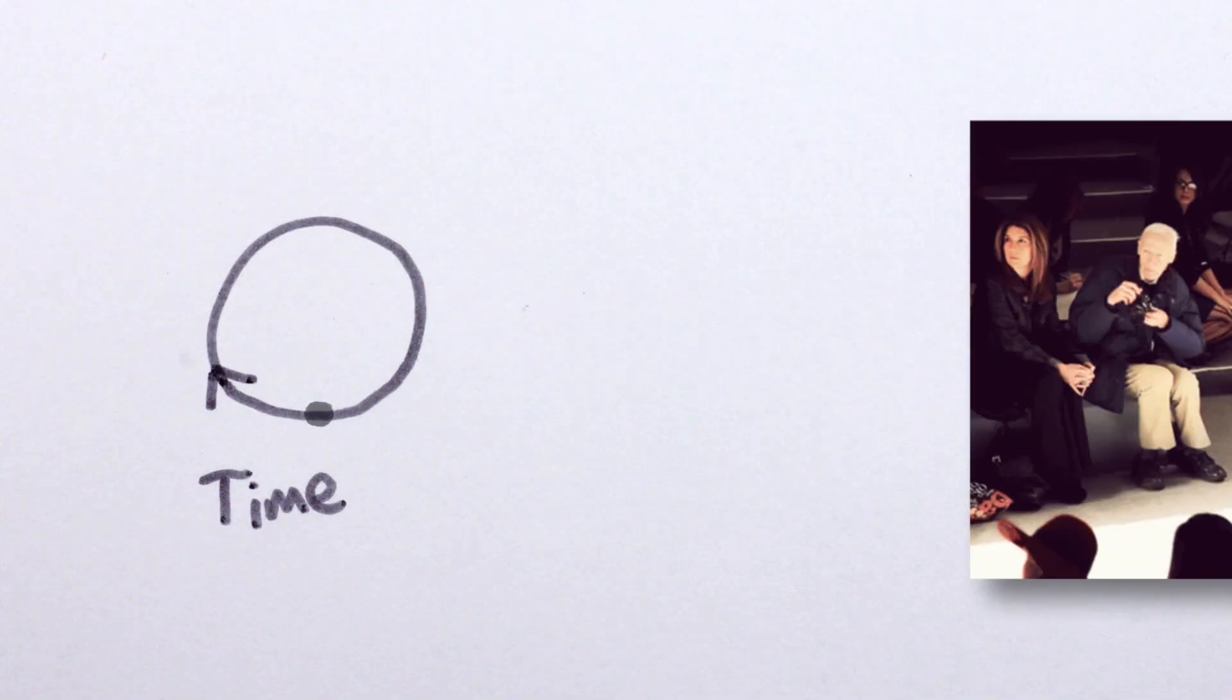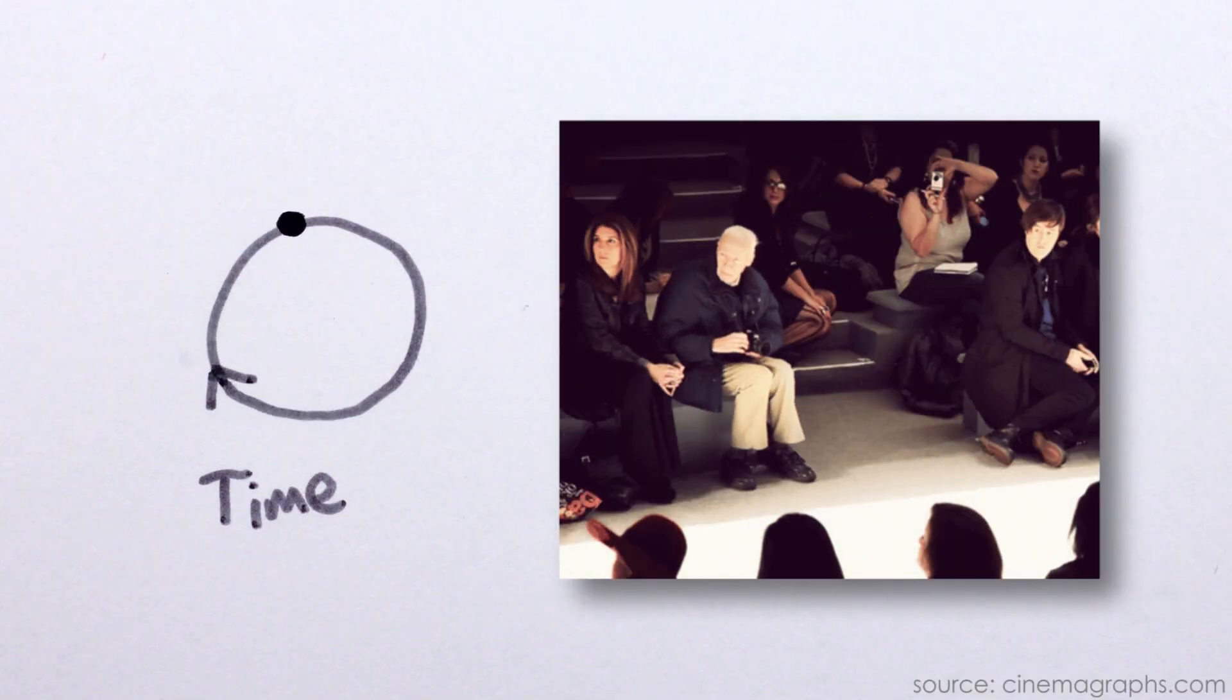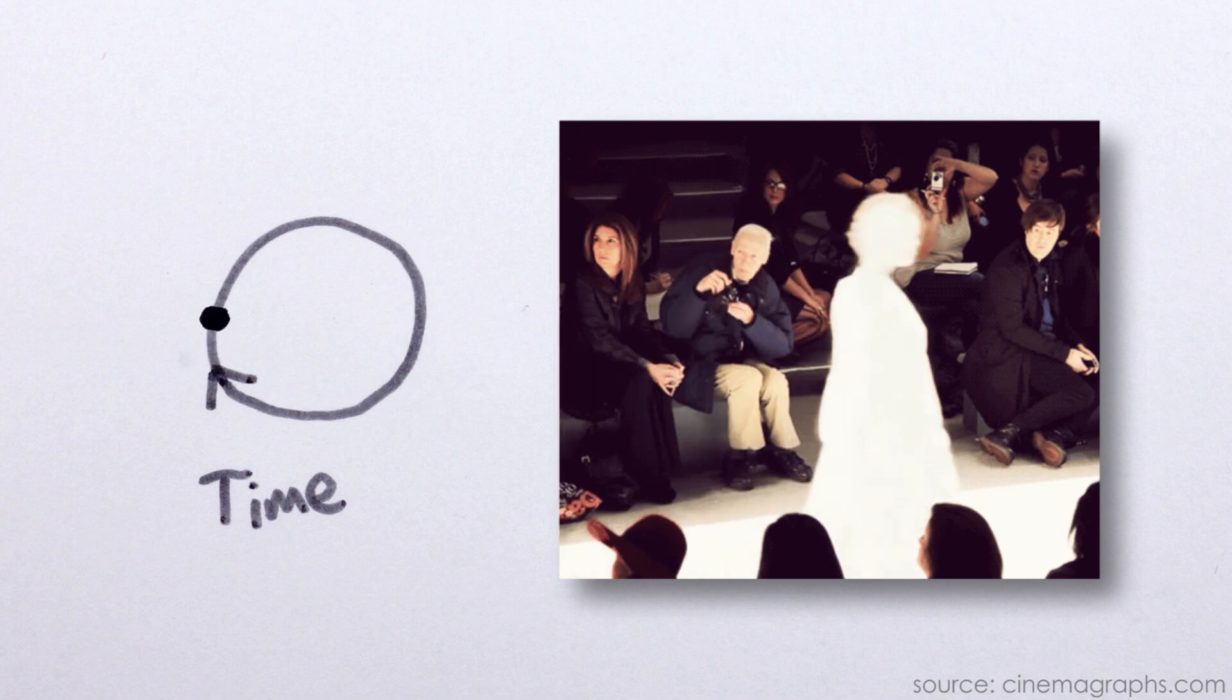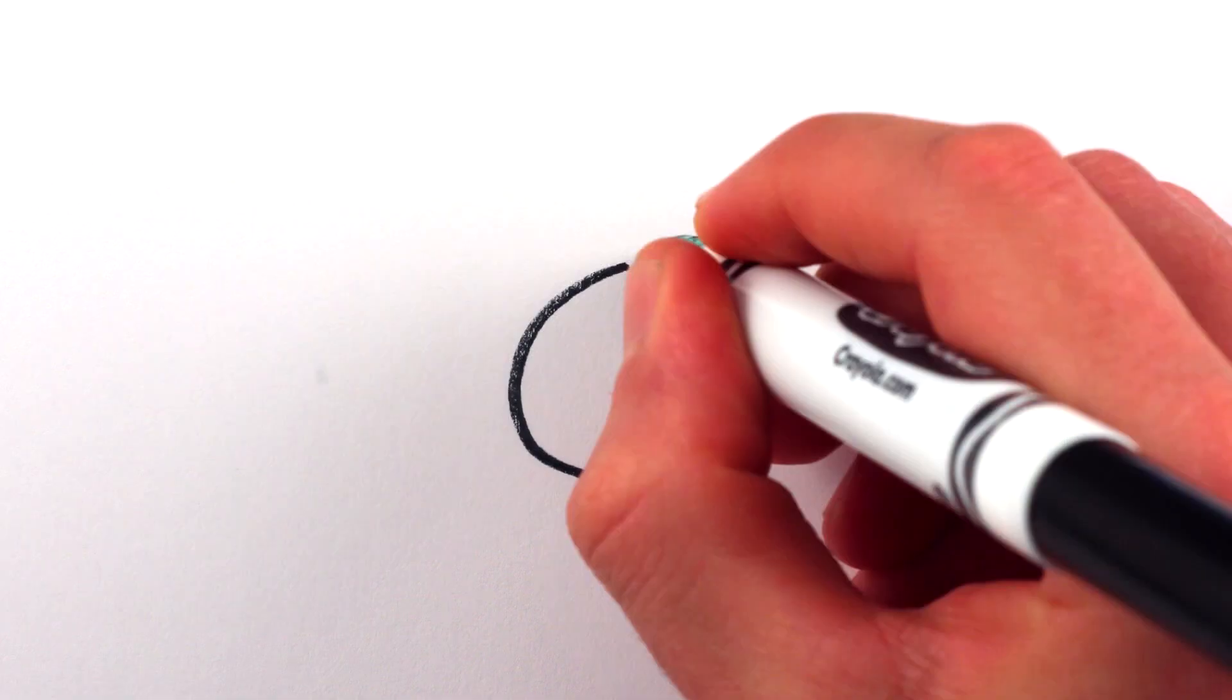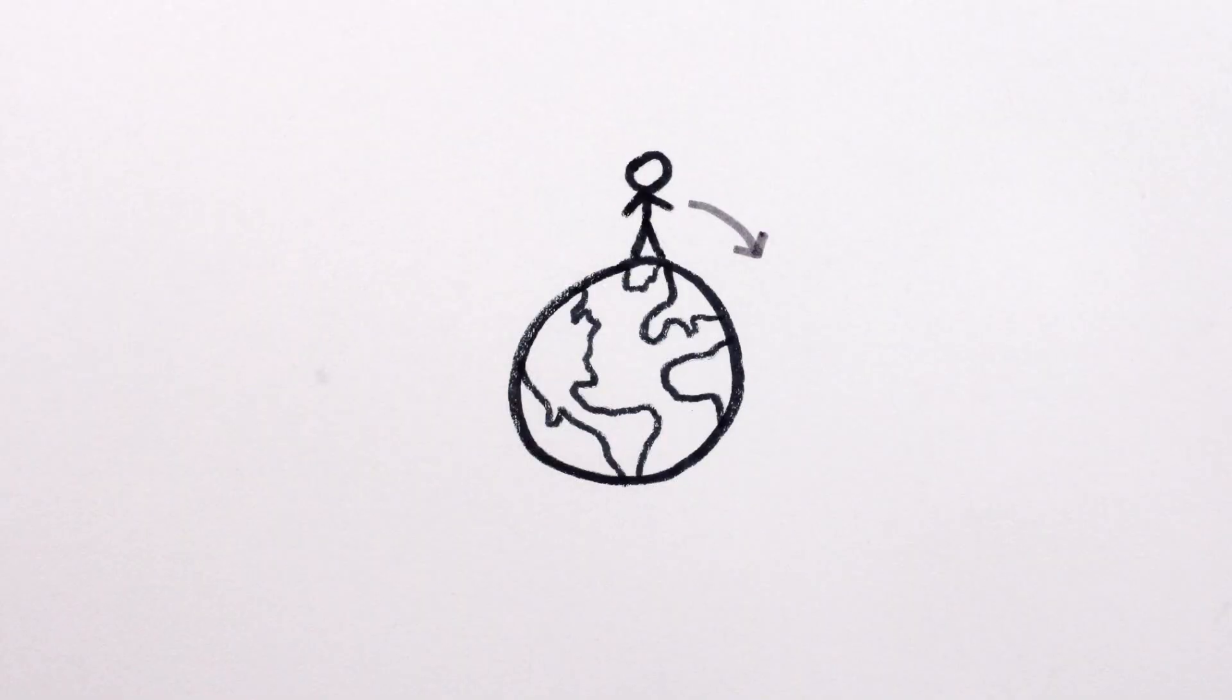Moving along one of these loops, you'd always feel like you were moving forwards in time, but overall you'd loop around and travel back to a time and place in your own past. It's a little like how you can keep moving forwards on the Earth, but Earth's curvature brings you back to where you started.